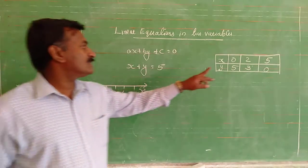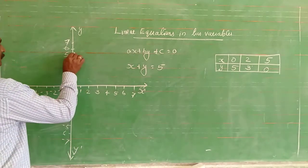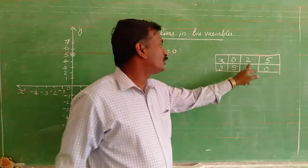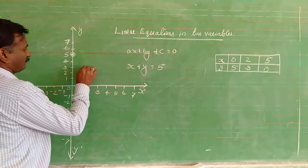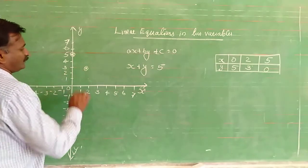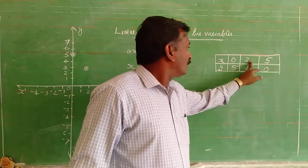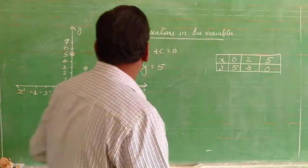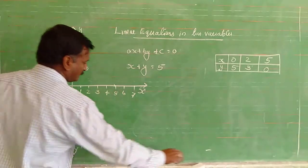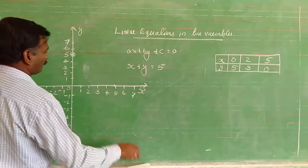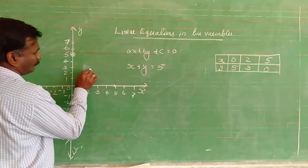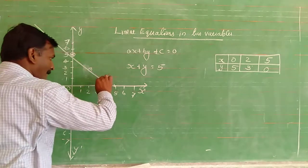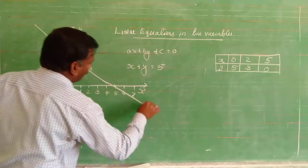First, we have 0, 5. X is equal to 0, y is equal to 5, here is the point. Next, 2, 3. X is equal to 2, y is equal to 3, this point. Next, 5, 0.